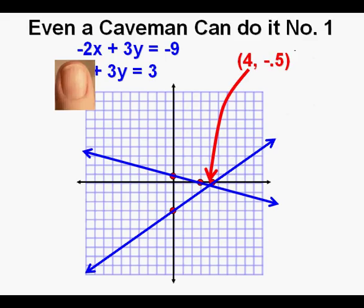Og sees where the lines cross and declares the solution looks to be about 4 comma negative 0.5. He acknowledges he cannot be 100% sure of the exact location due to line thickness error, but knows he is at least pretty close.